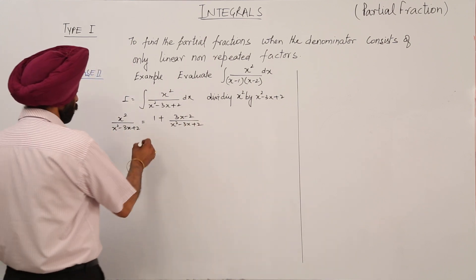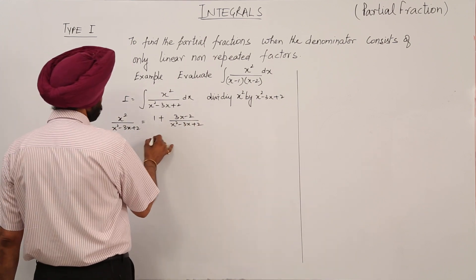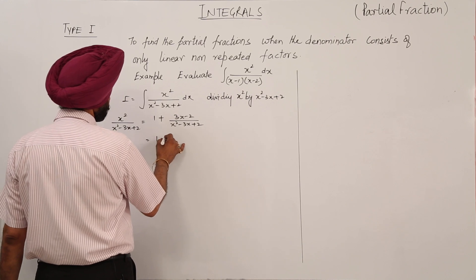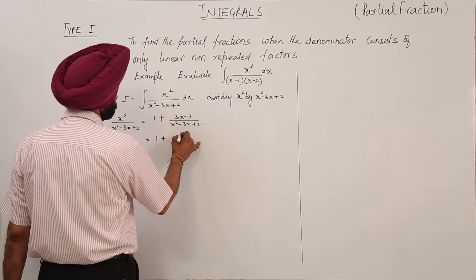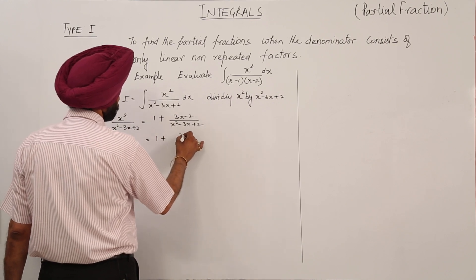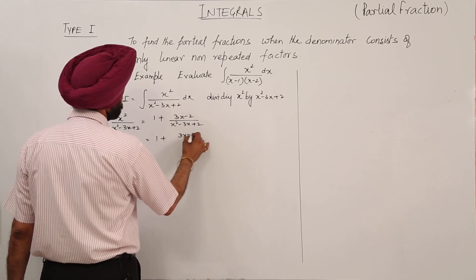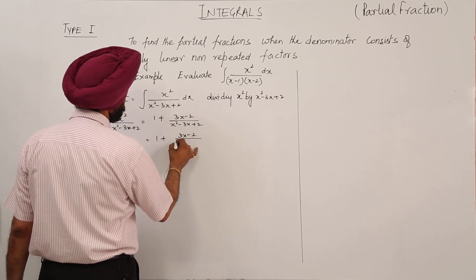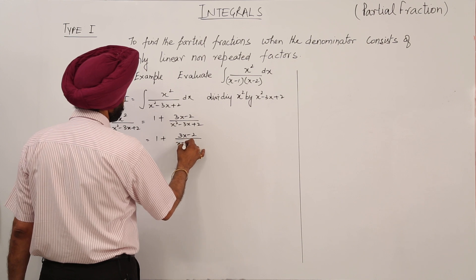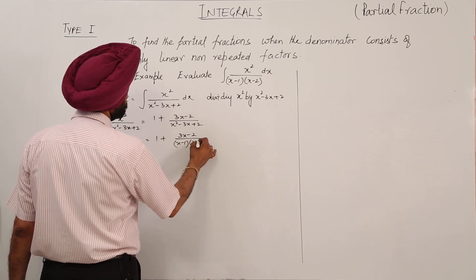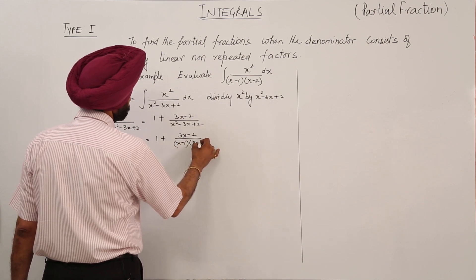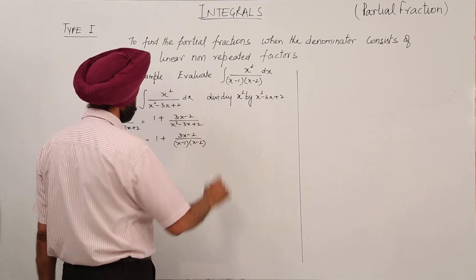After division, we are having (3x - 2) upon (x² - 3x + 2). We can factor the denominator, writing this as (3x - 2) upon (x - 1)(x - 2).